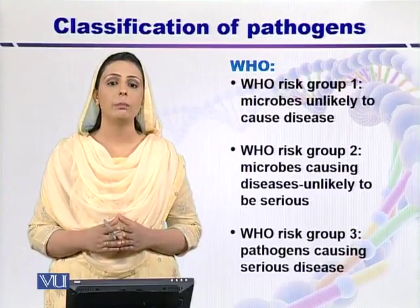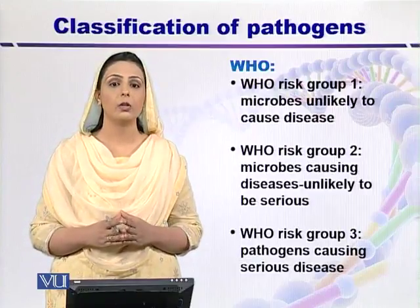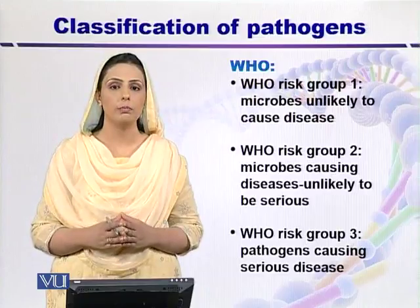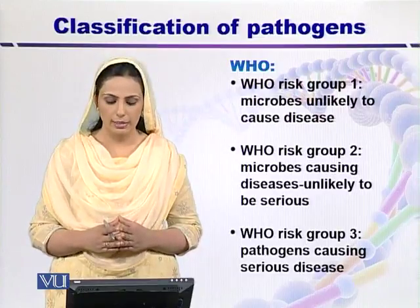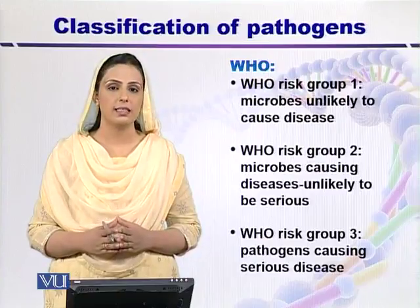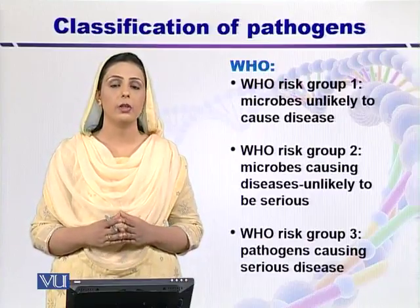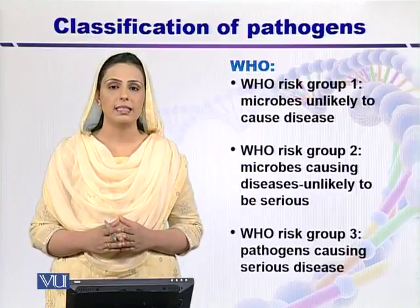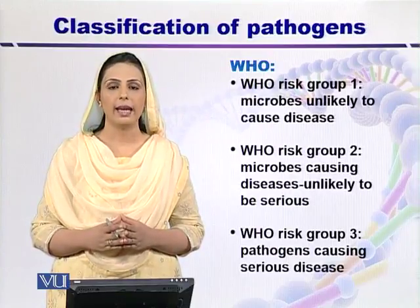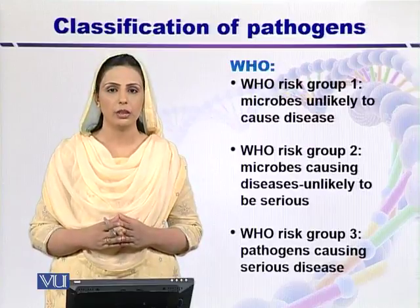WHO risk group 3 includes pathogens — microorganisms that can cause diseases in human beings or in animals. These pathogens cause serious or life-threatening disease in human beings, but these diseases are easily treatable and can be prevented by taking precautionary measures.